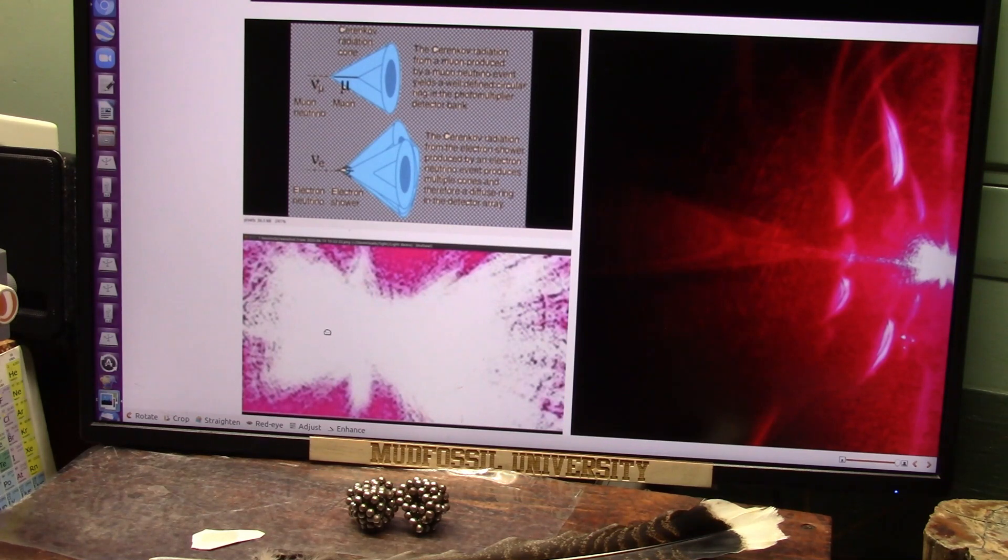Right here, this is cosmic energy. This is the same exact particles they're looking for that are coming through our atmosphere. Cosmic radiation, muons. You see it, muon? That's what cosmic radiation is. That's that black ball, the muons.